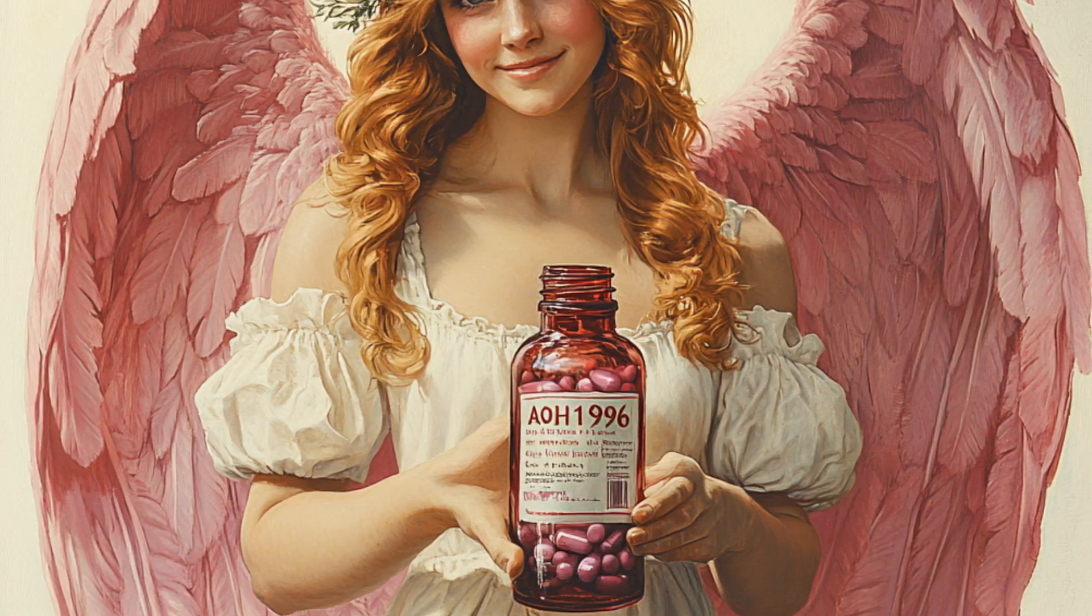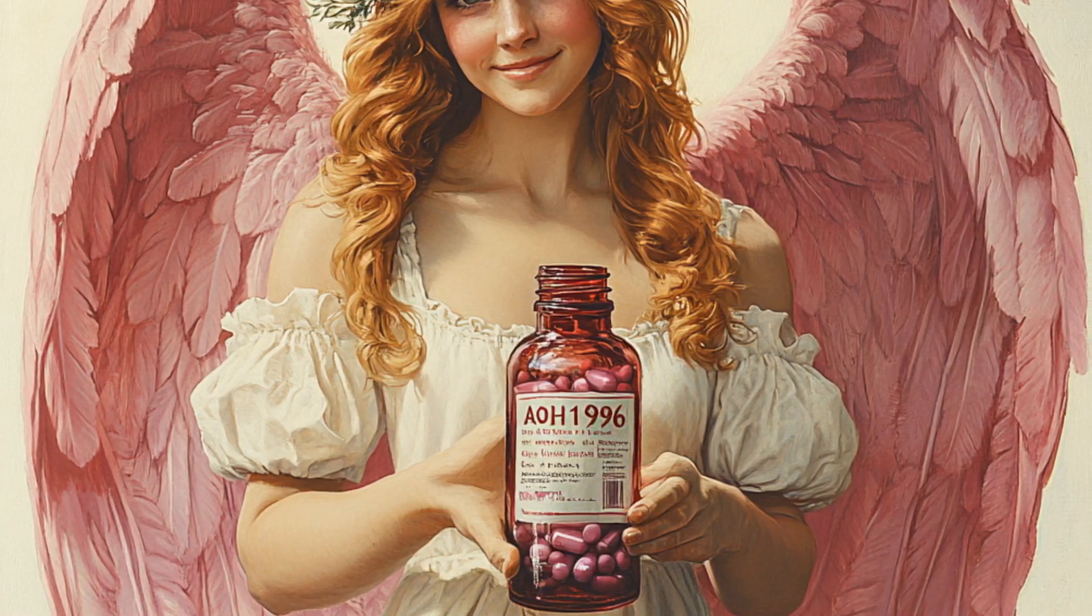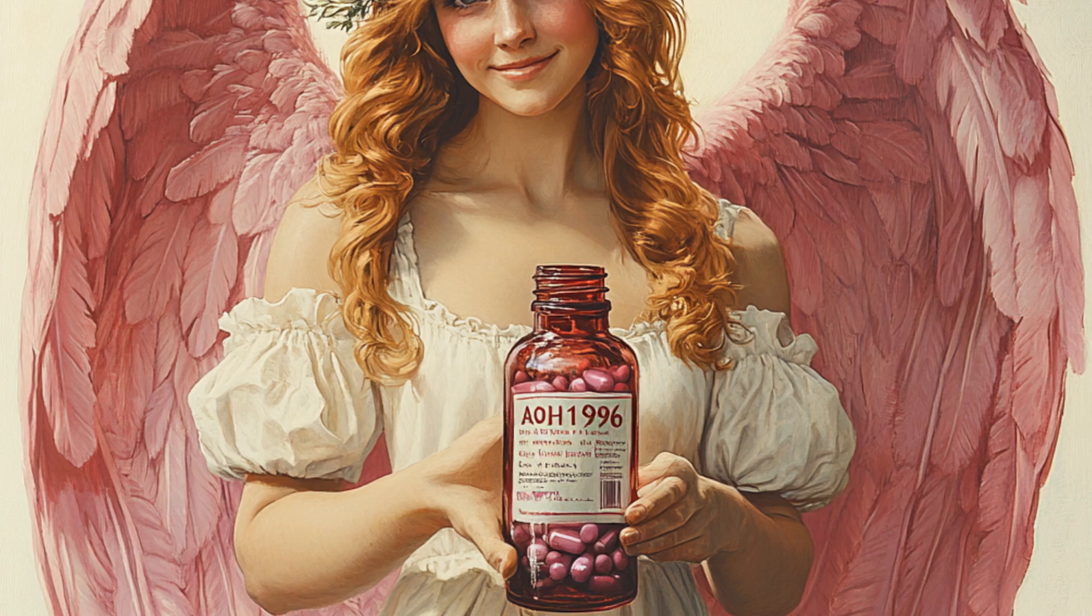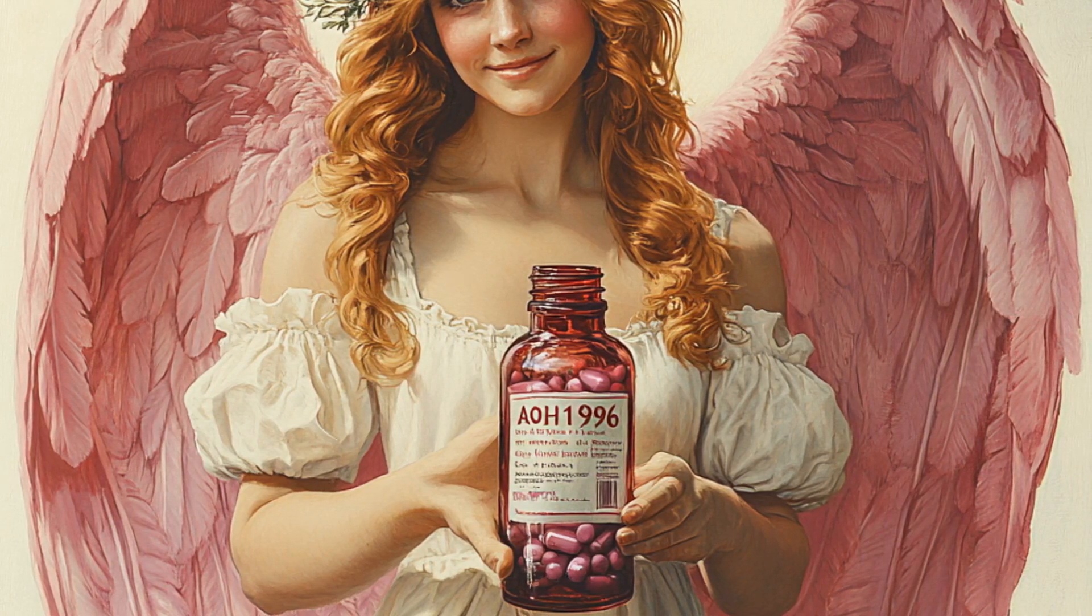So the molecular formula tells us that each molecule of AOH1996 is made up of 26 carbon atoms, 22 hydrogen atoms, 2 nitrogen atoms, and 4 oxygen atoms arranged in a specific way to form the compound.